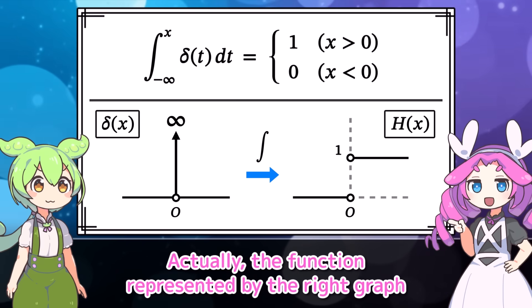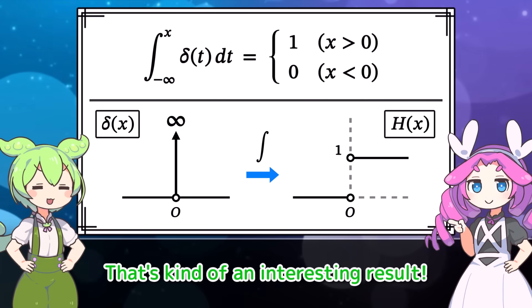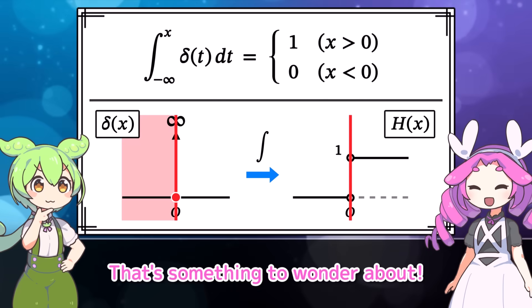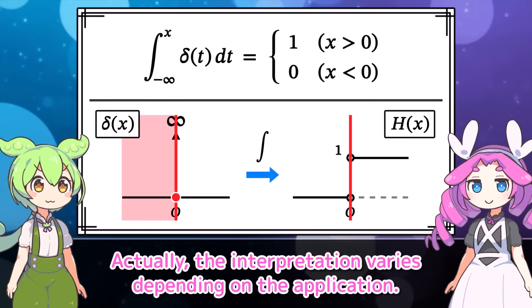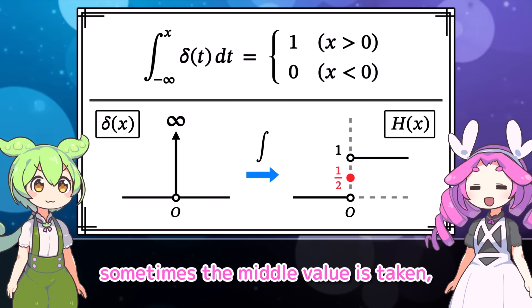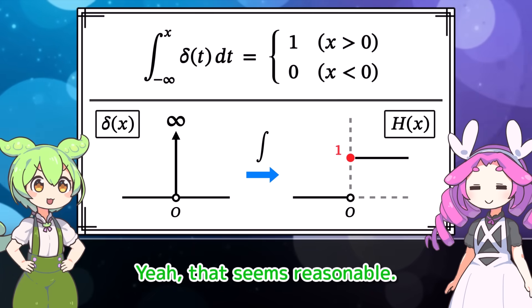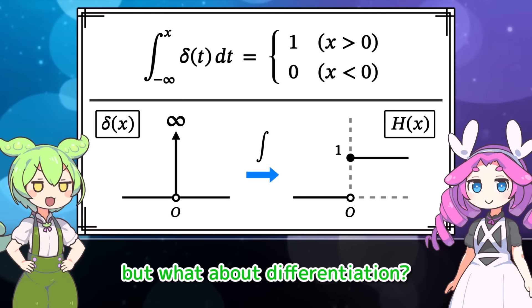The function represented by this graph is known as the Heaviside step function. That's an interesting result. By the way, what happens if you integrate exactly up to zero? The interpretation varies depending on the application. As a common interpretation, sometimes the middle value is taken, or it is shifted toward one side. So we understood the integration of the delta function, but what about differentiation?